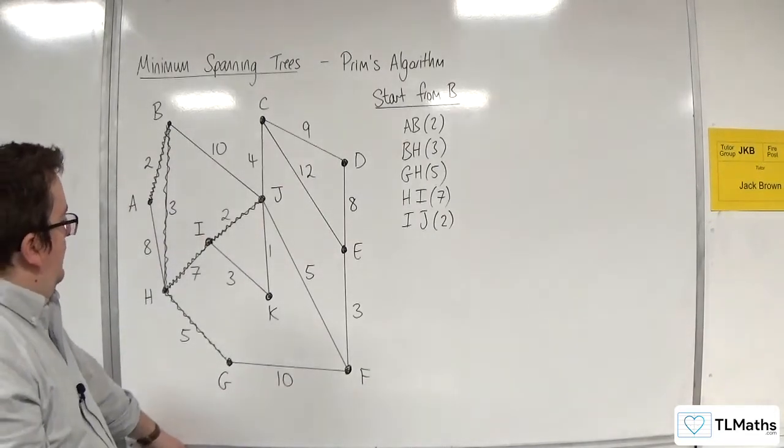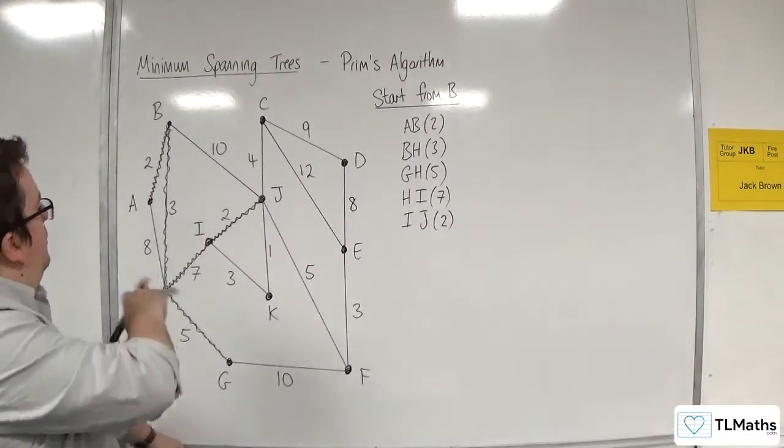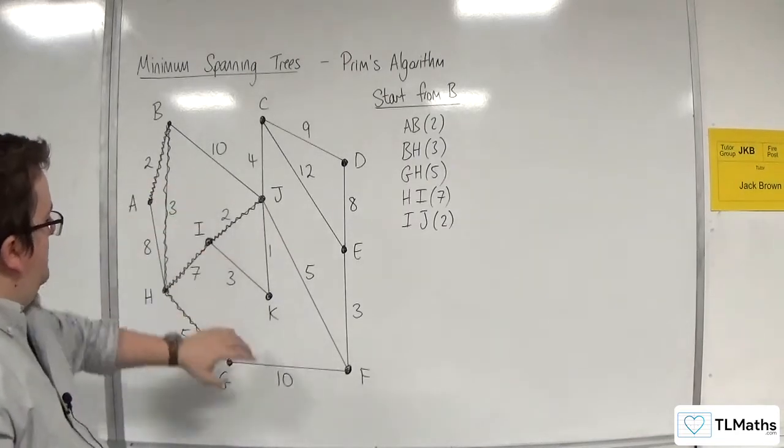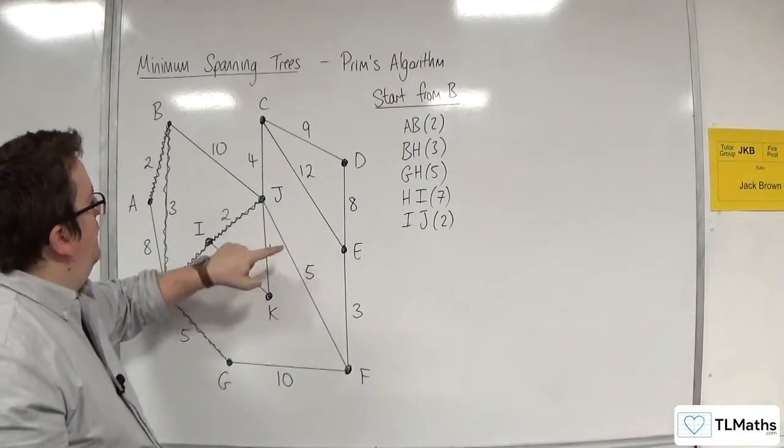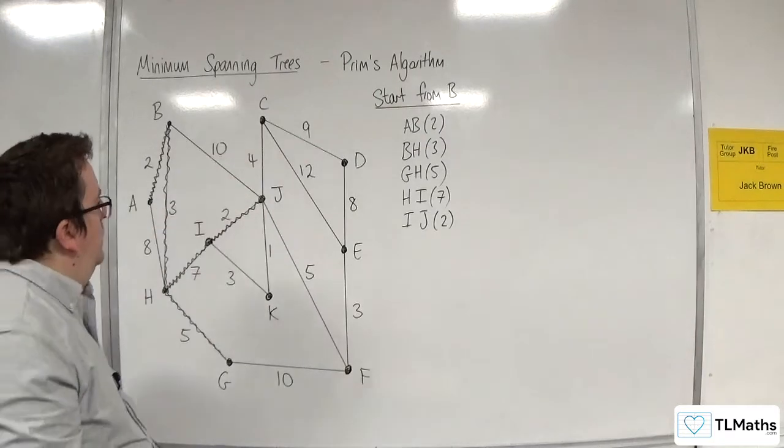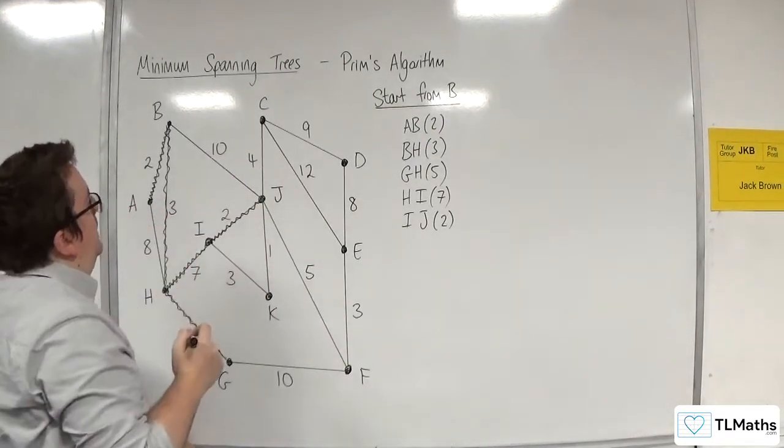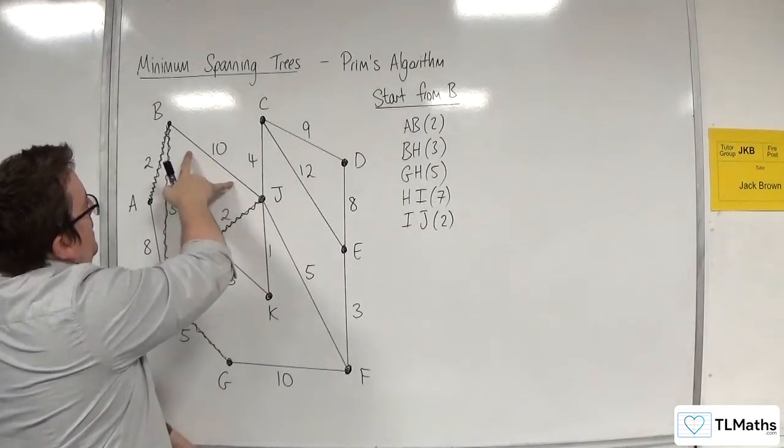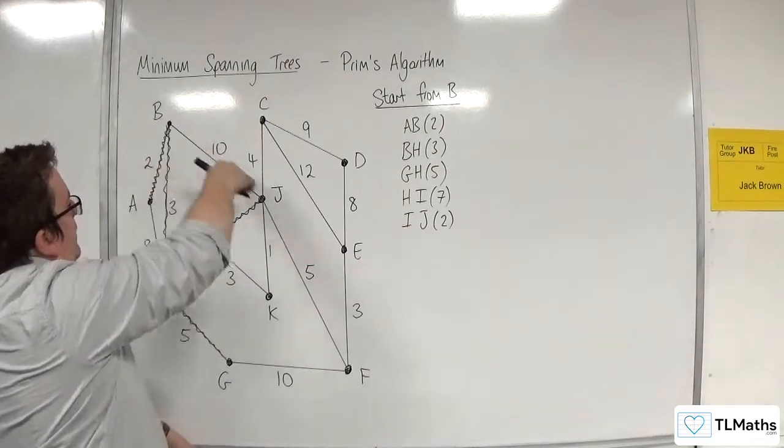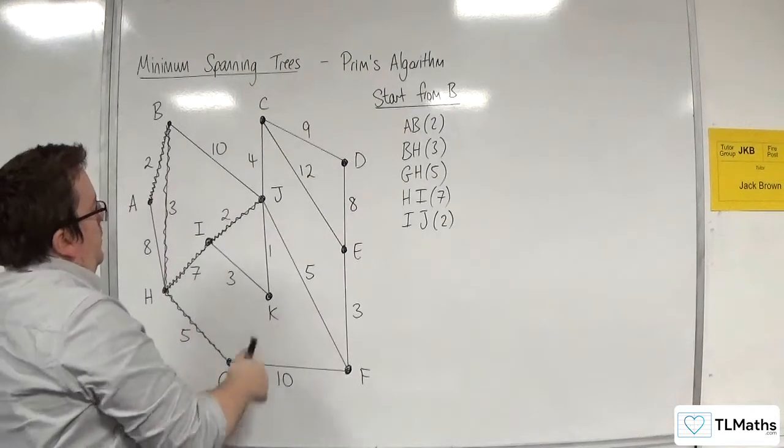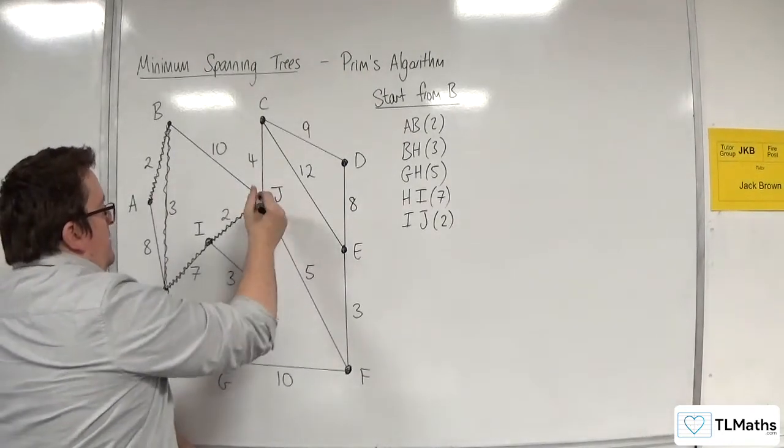Then the next one out of all of them, we've got 8, 10, 10, 3, 1, 5, and 4. Now that we've connected J, we're looking at the edges coming out of J as well. BJ here will never get picked because that would create a cycle. So we're going to go for the 1 here, so JK.